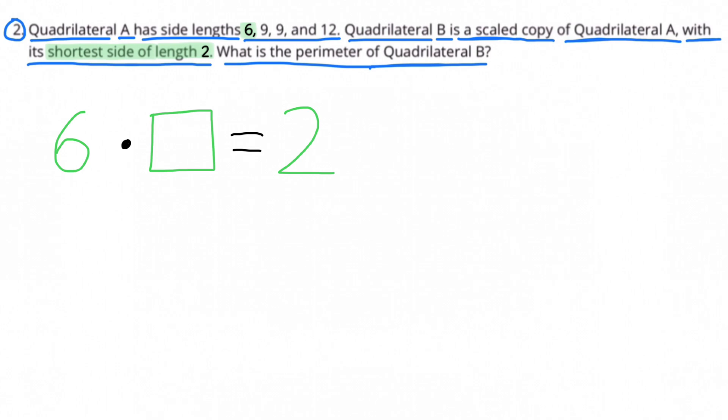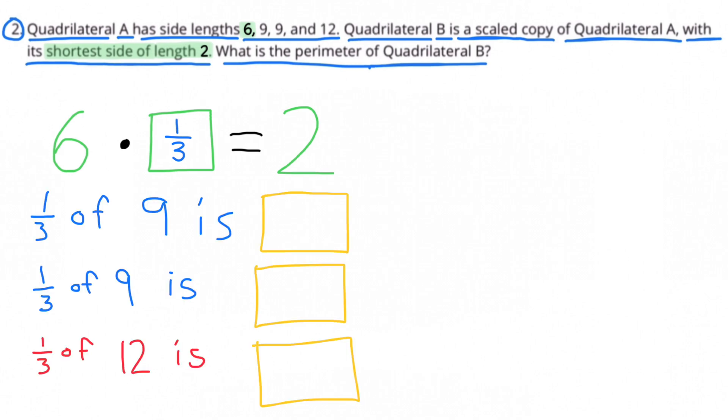6 times what number equals 2? 6 times 1 third equals 2, since 2 is 1 third of 6. So we know that the scale factor is 1 third.